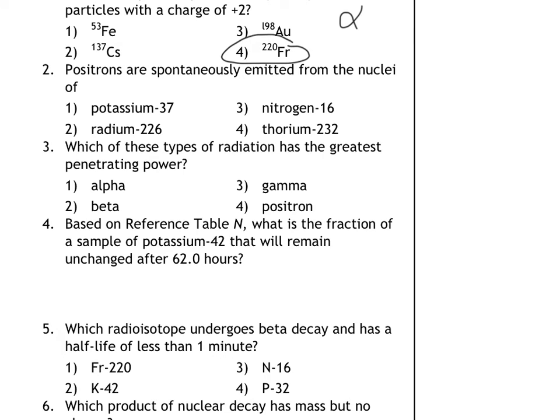Positrons are spontaneously emitted from the nuclei of. Okay, so positrons have no mass and they have a charge of positive 1. There's no real pattern for which elements will decay via positron decay, but it would be something light. I can almost certainly say it's not going to be radium-226 or thorium-232. But I can just check table N to see which one it will be. I just went ahead and checked table N and I was able to find out that potassium-37 or K-37 does decay using positron decay. So for number 2 my answer is choice 1.